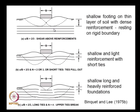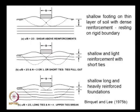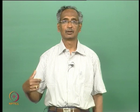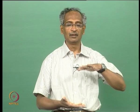Mode 1 happens when the first reinforcement layer is at sufficient depth where u/b is greater than 2/3, and the soil is very densely reinforced, so there is no failure within the reinforced soil bed. In that case, failure happens above the topmost reinforcement layer — similar to foundation beds that are thin relative to the footing width, as seen when designing reinforced soil embankments resting on geocell mattresses over a thin soft clay layer.